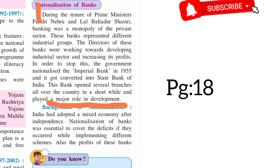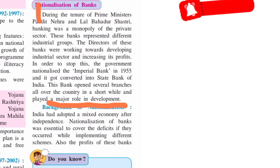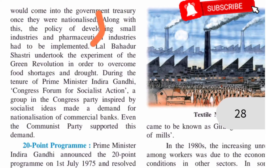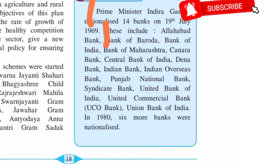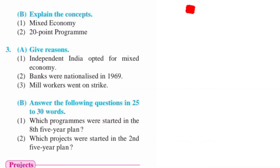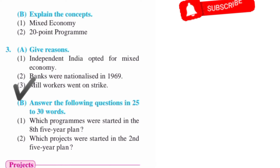Next question, number 3b: 'Banks were nationalized in 1969.' The answer is on page number 18. During the tenure of Prime Ministers Pandit Nehru and Lal Bahadur Shastri — write from there, but cut the 'background' paragraph. Write up to the word 'nationalized' on the next page, and add one more point from page 18: 'Prime Minister Indira Gandhi nationalized 14 banks on 19th July 1969.'